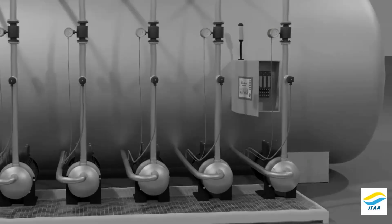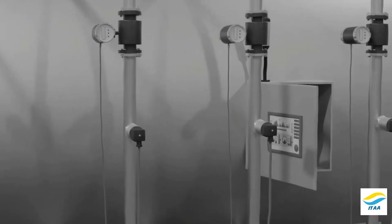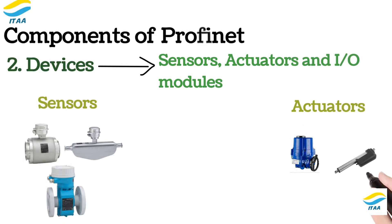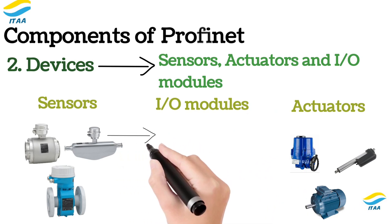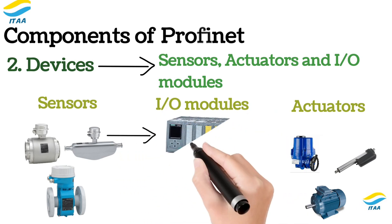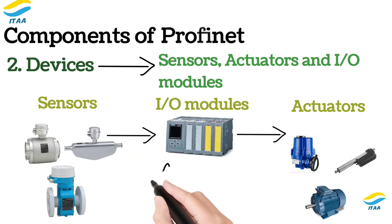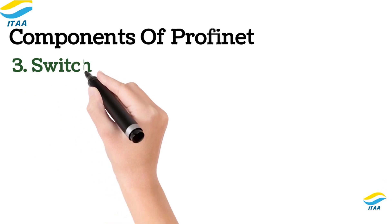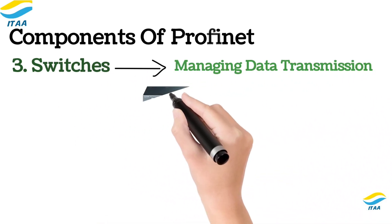Devices include sensors, actuators, and I/O modules. Sensors collect data such as temperature, pressure, or machine status. Actuators perform actions such as opening valves, moving motors, or starting pumps. I/O modules connect sensors and actuators to the controller and convert signals between analog and digital formats.